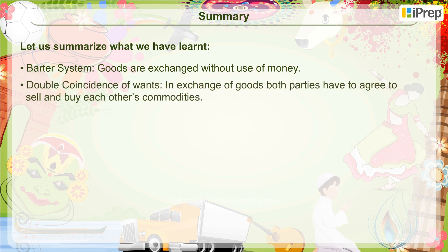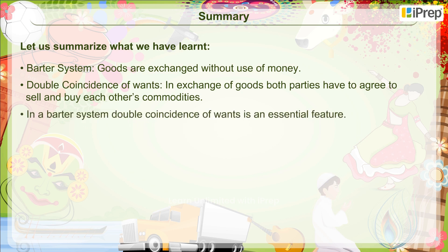Double Coincidence of Wants: in exchange of goods, both parties have to agree to sell and buy each other's commodities. In a barter system, double coincidence of wants is an essential feature.